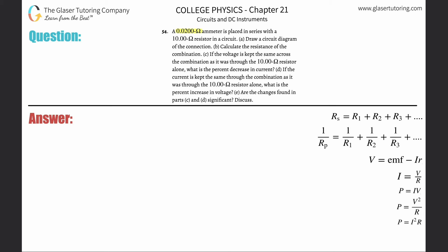Number 54: A 0.02 ohm ammeter is placed in series with a 10 ohm resistor in a circuit. Draw a circuit diagram. Alright, so basically here's your circuit. You got your ammeter here, just simply draw a little circle, write a little A. You got some resistance over here.